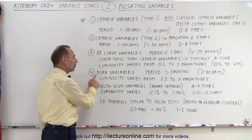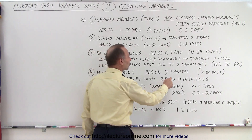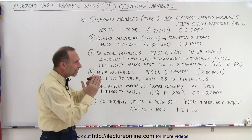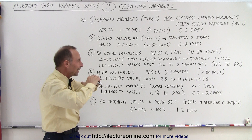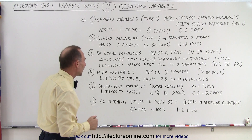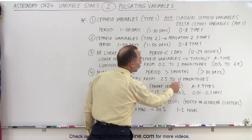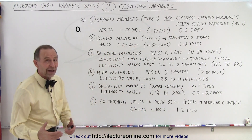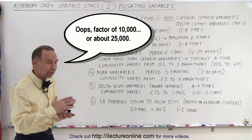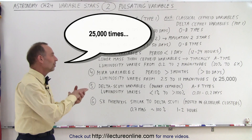Then we have the Mira variables, which are the largest of the variable stars. They have periods that exceed 80 days. Cepheid variables and Mira variables overlap a little bit in their period, but we can see the difference in how they vary. The luminosity of Mira variables varies tremendously — from 2.5 to 11 magnitudes. Eleven magnitudes represents a factor of more than 100, about 250 times — meaning the luminosity can change by as much as 250 times from lowest to highest brightness.